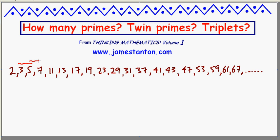So three and five is a pair of twin primes. Five, seven. Eleven, thirteen. Seventeen, nineteen. Let's see. Forty-one, forty-three. Fifty-nine, sixty-one.